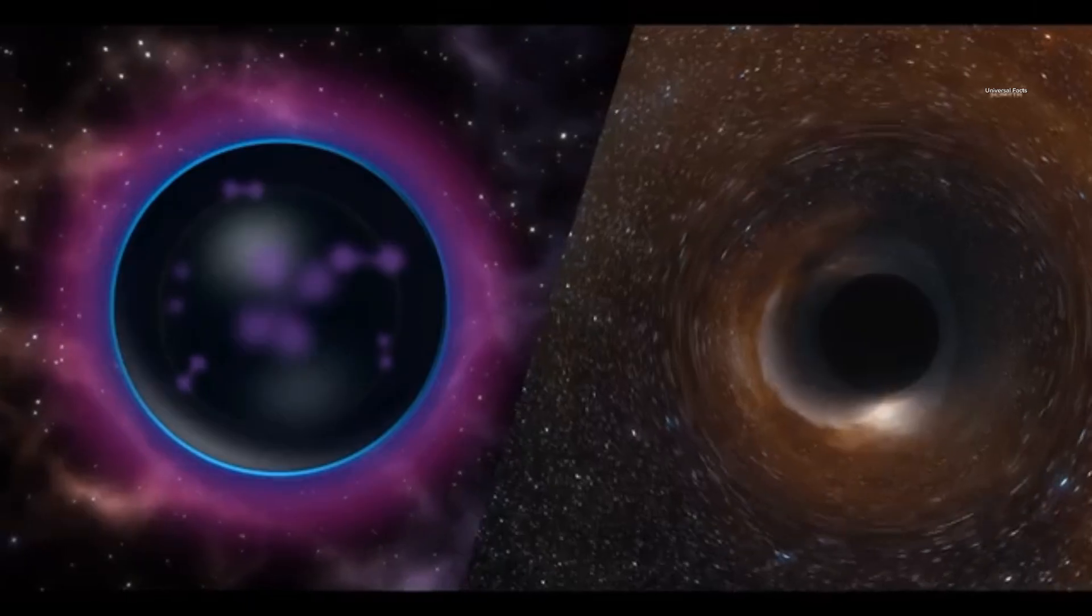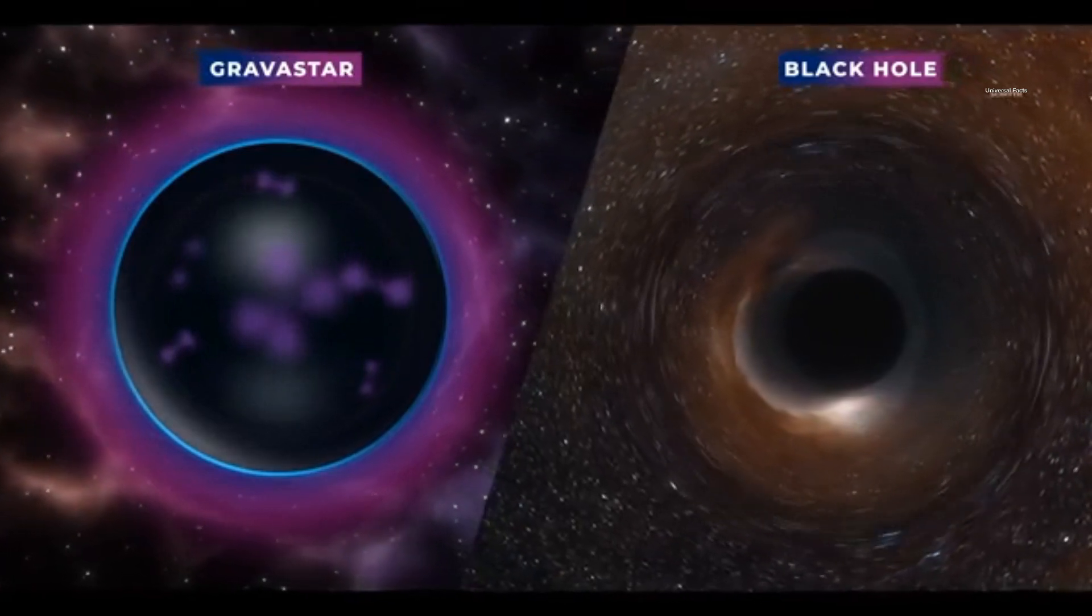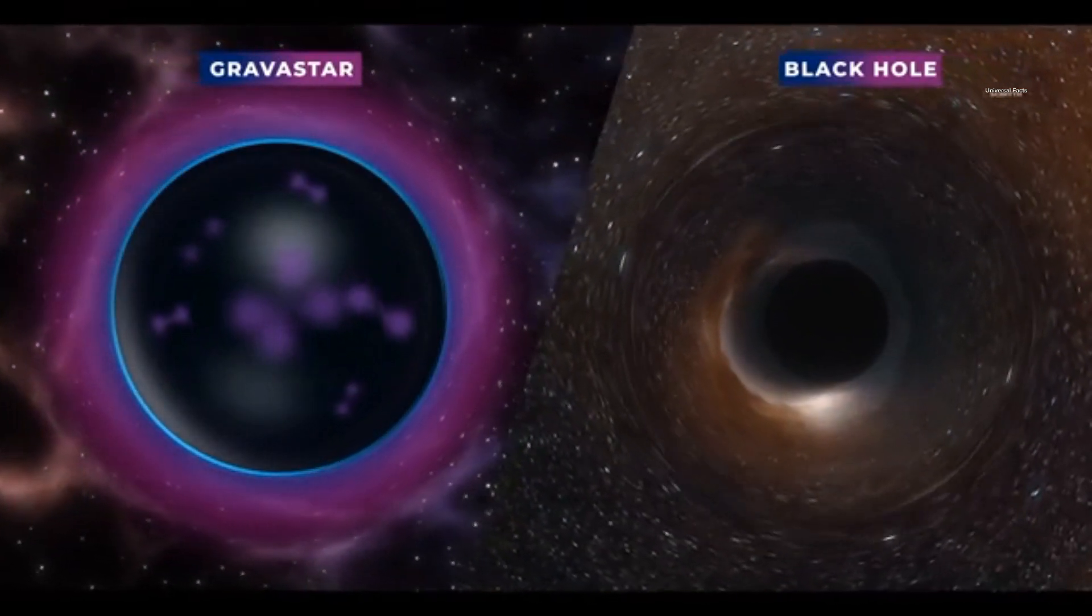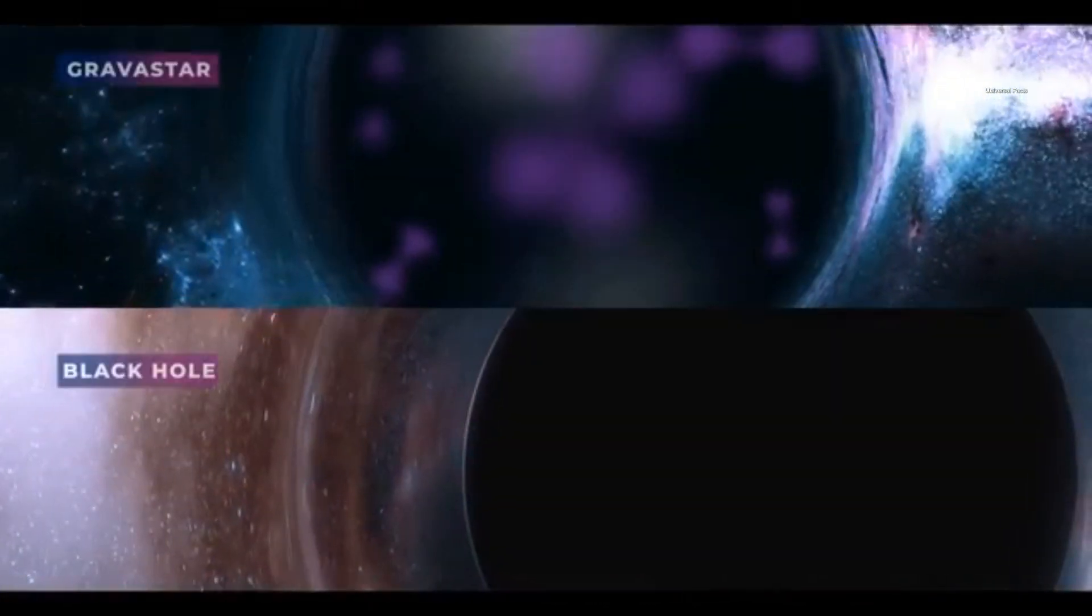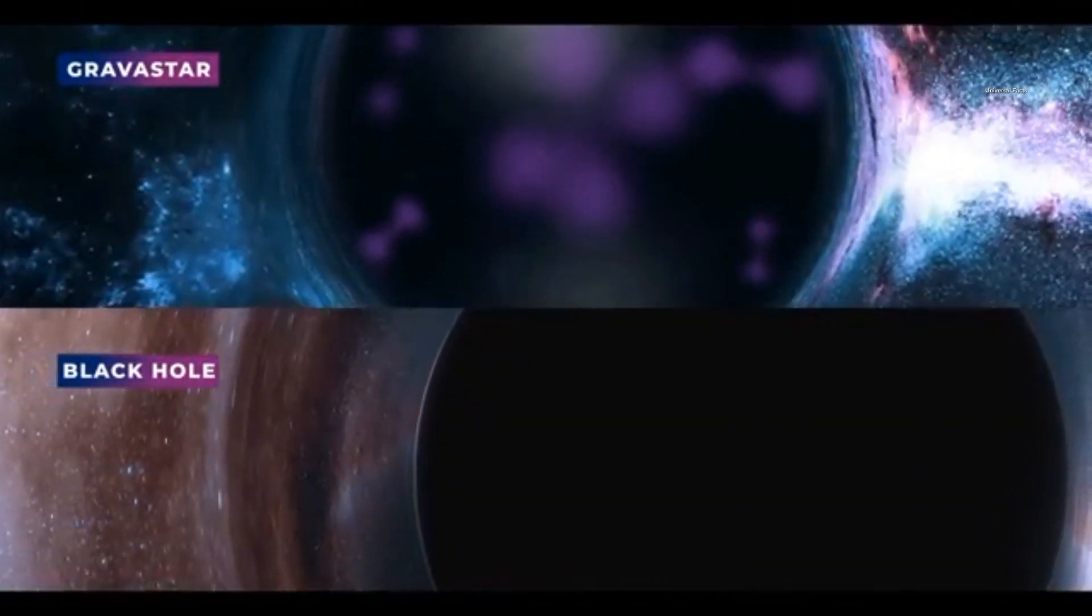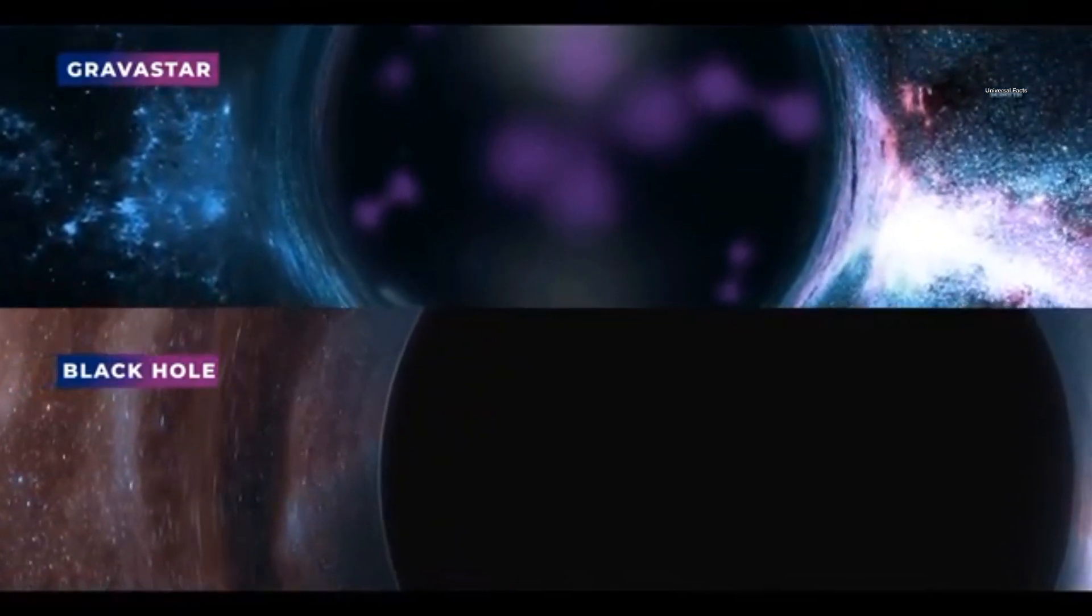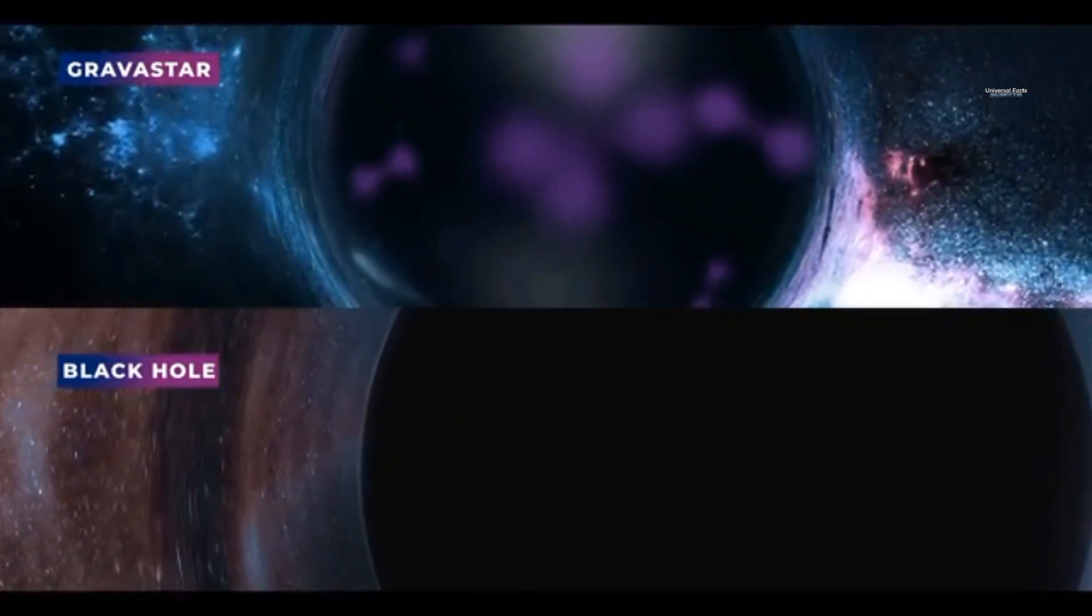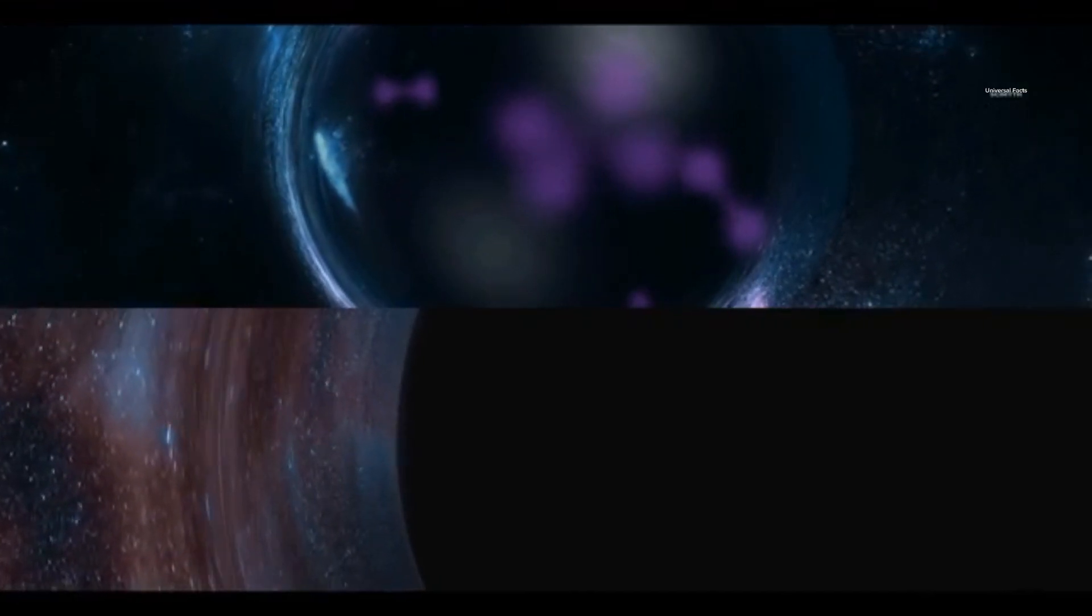Unlike black holes, gravistars do not have a singularity at their center. However, when observed from the outside, they appear very similar to black holes. Both gravistars and black holes distort spacetime in comparable ways, making it extremely difficult to distinguish between the two.